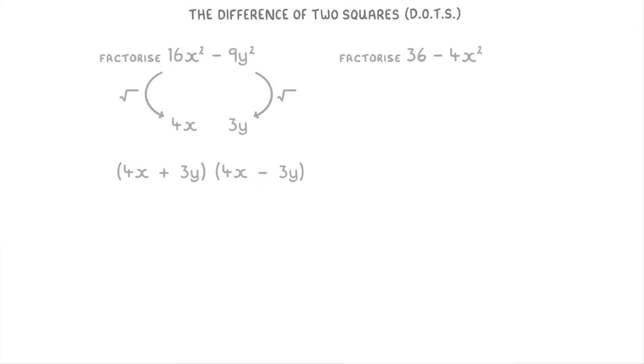In this next one we need to factorize 36 minus 4x squared. Because the square root of 36 is 6 and the square root of 4x squared is 2x, our brackets will be 6 plus 2x and 6 minus 2x.